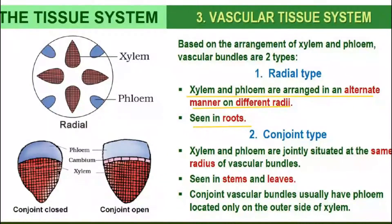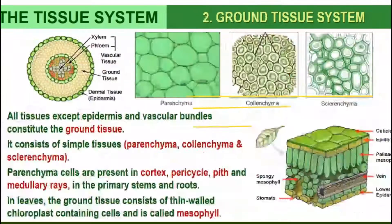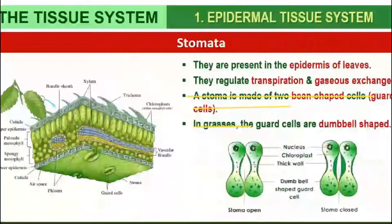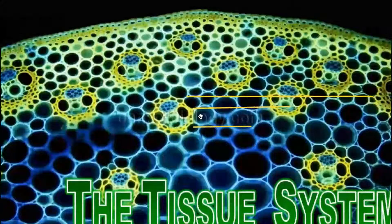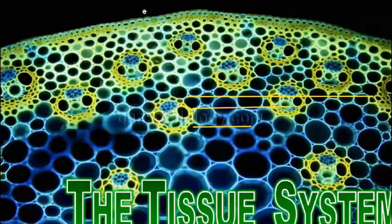In this session we have completed the different types of tissue systems: epidermal tissue system, ground tissue system, and vascular tissue system. That's all about today's class. Thank you for watching this video.